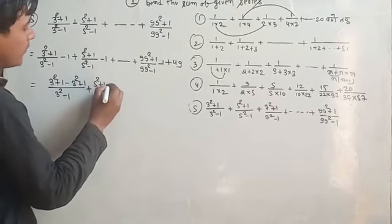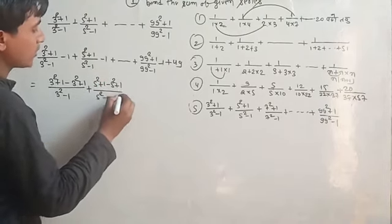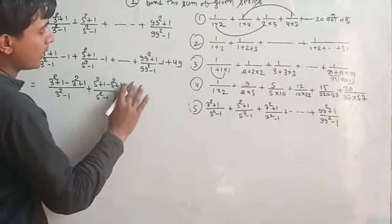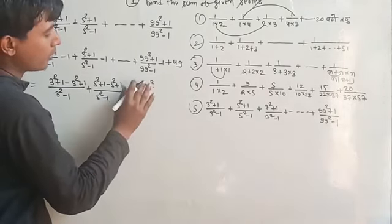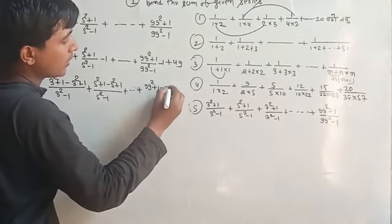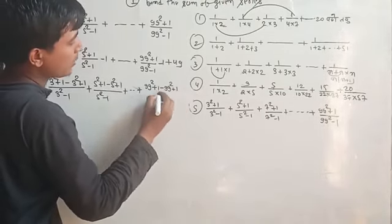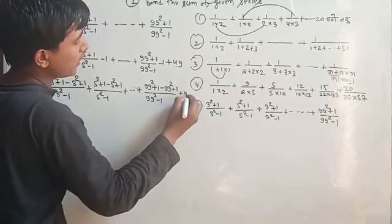5 square plus 1 minus 5 square minus 1 upon 5 square minus 1, and here we will add dot dot, plus 99 square plus 1 minus 99 square minus 1 upon 99 square minus 1, and here it will be plus 49.